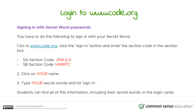Now we have here two sections: 5A and 5B, with their unique section code. If you are in 5A, you have to use JSWJLV. If you are in 5B, you have to use HSRRTC.